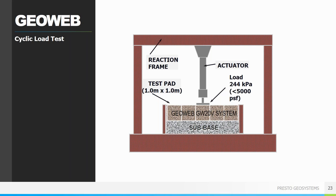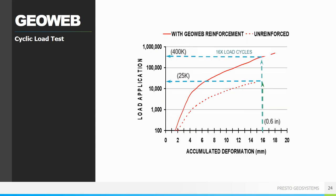We also had a dynamic load test performed. Pavement load testing compared the performance of GeoWeb-reinforced and unreinforced aggregate. Each section was loaded until it experienced six-tenths of an inch of deformation. For the non-GeoWeb section, this took about 25,000 load cycles. By adding GeoWeb, the number of load cycles went up to 400,000 — an increase of about 16 times. You can imagine how this would improve the lifecycle cost of any pavement.